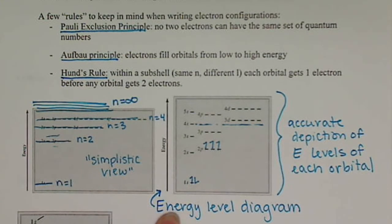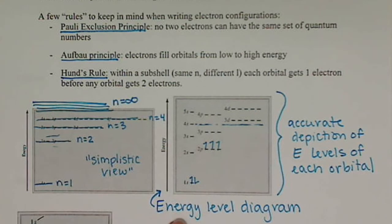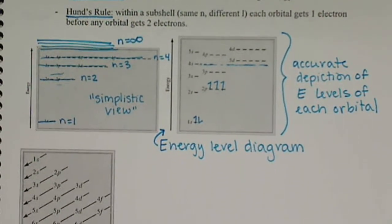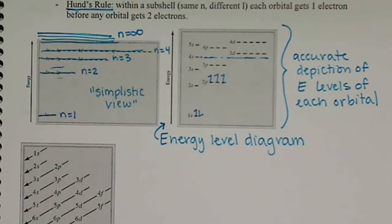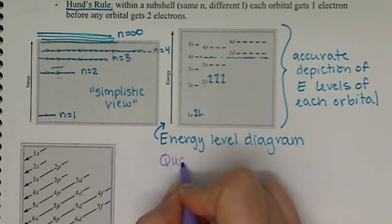So our electron level diagrams, drawing our electrons out like this, is one way to represent our electrons instead of using quantum numbers.